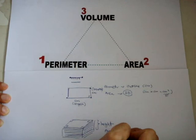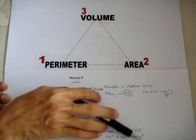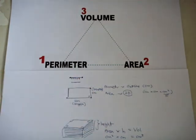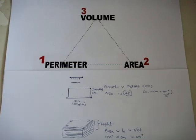CM² times CM gives you CM³, and therefore volume is in CM³. What exactly is volume? Very simple — your shadow is area, which is 2D. You yourself are 3D, and that is volume. As long as you know how to relate what you have learned to yourself, you will definitely get a better understanding.